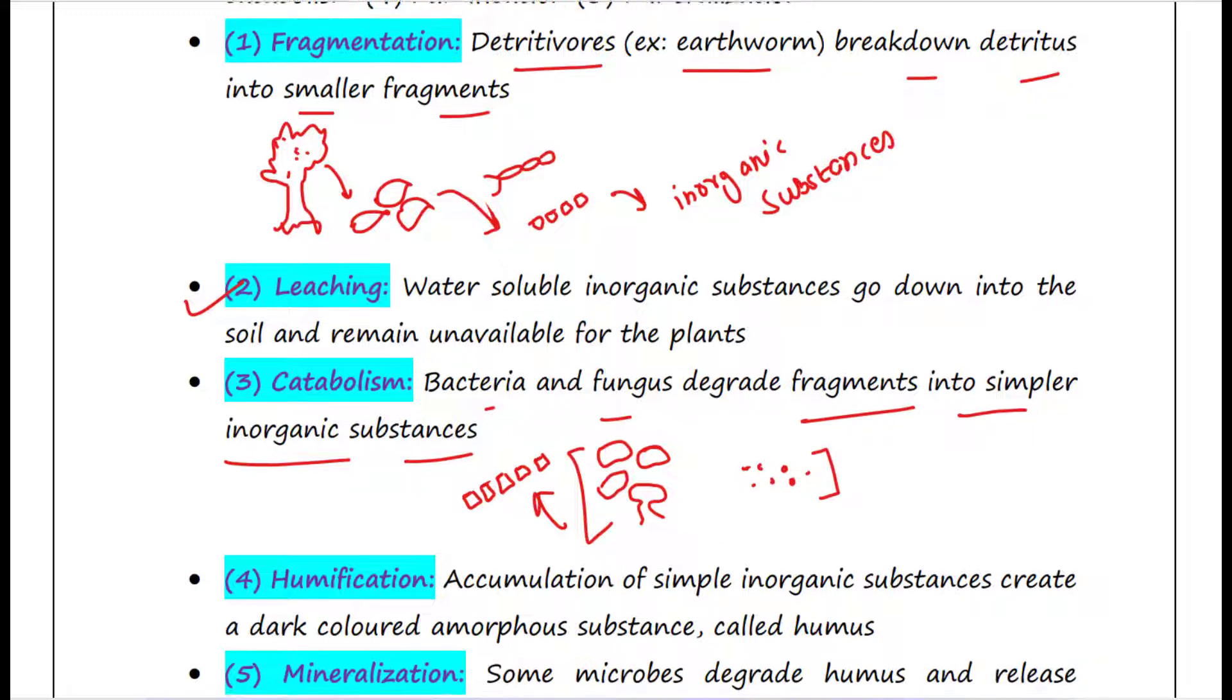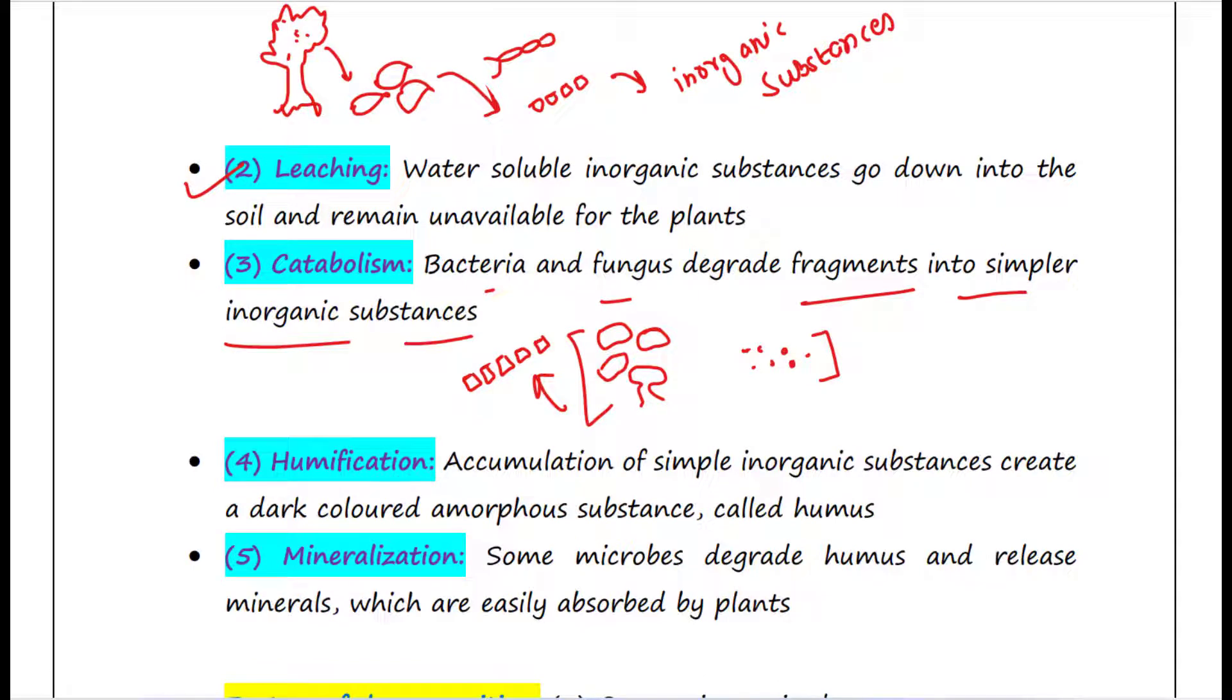Next process is humification. Accumulation of simple inorganic substances create a dark colored amorphous substance called humus. So after catabolism, simpler inorganic substances are generated and those will be accumulated to form a dark colored substance that is called humus, and it is amorphous, meaning it does not have any shape.